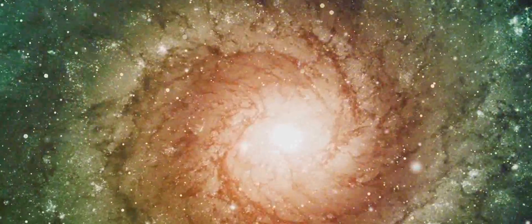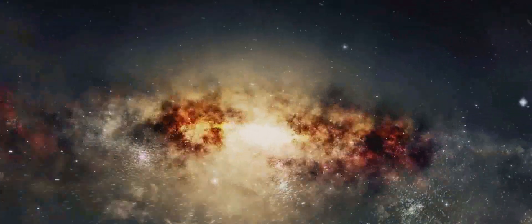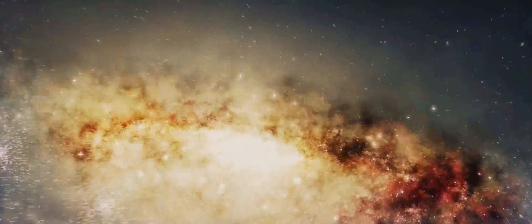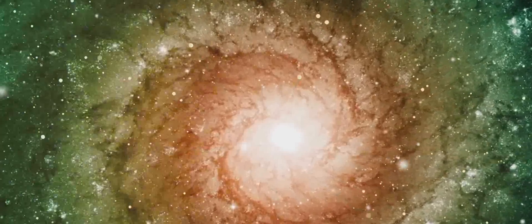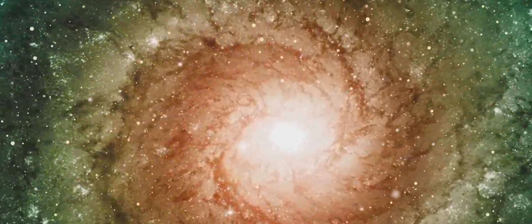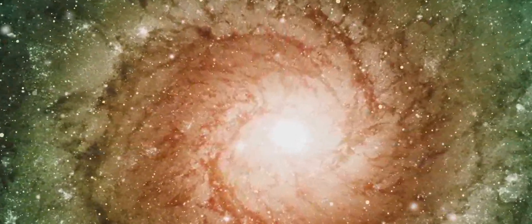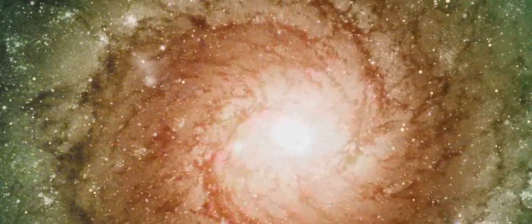But how did these galaxies come into being? The answer lies in the primordial soup of the universe, a mixture of gas and dark matter. These ingredients, under the right conditions, began to clump together, forming the seeds of what would eventually become galaxies.